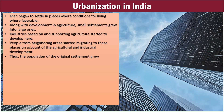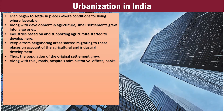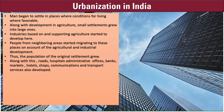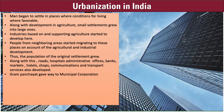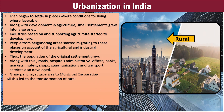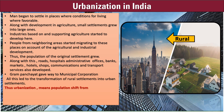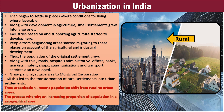Thus the population of the original settlement grew. Along with this, roads, hospitals, administrative offices, banks, markets, hotels, shops, communications, and transport services also developed. Gram Panchayats gave way to municipal corporations. All this led to the transformation of rural settlements into urban settlements. Thus, urbanization means population shift from rural to urban areas. Urbanization is the process whereby an increasing proportion of population in a geographical area lives in urban settlements.